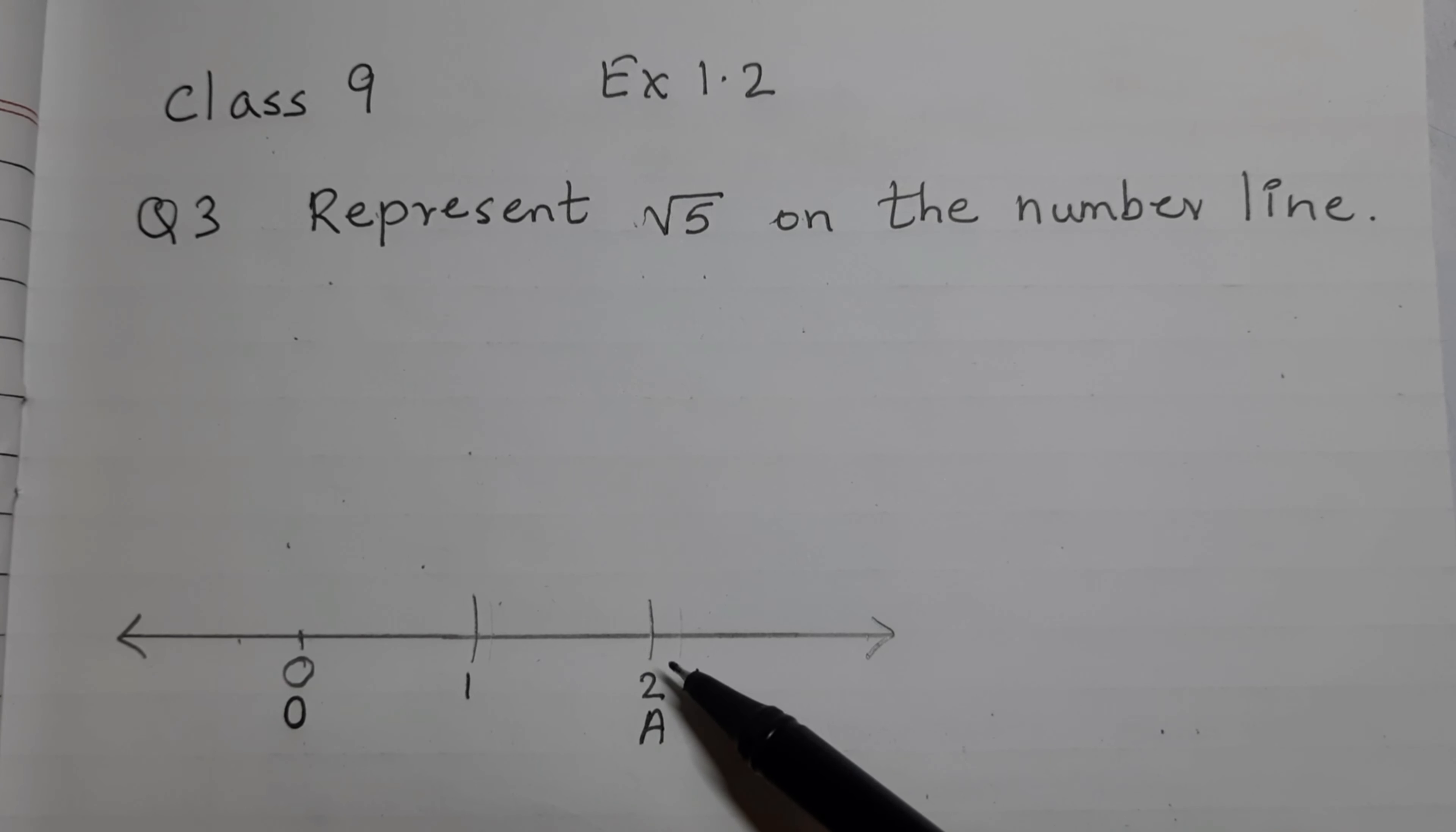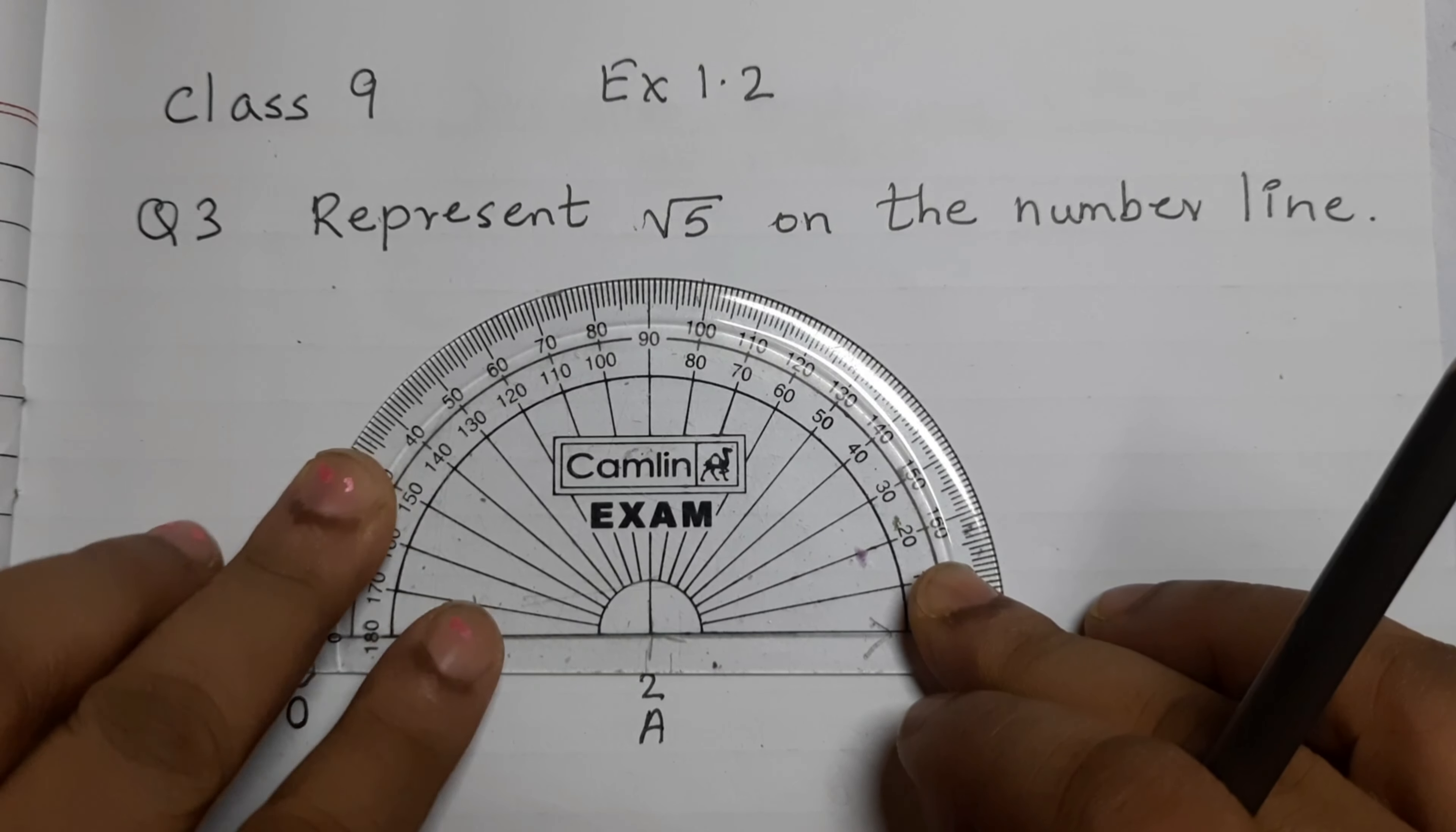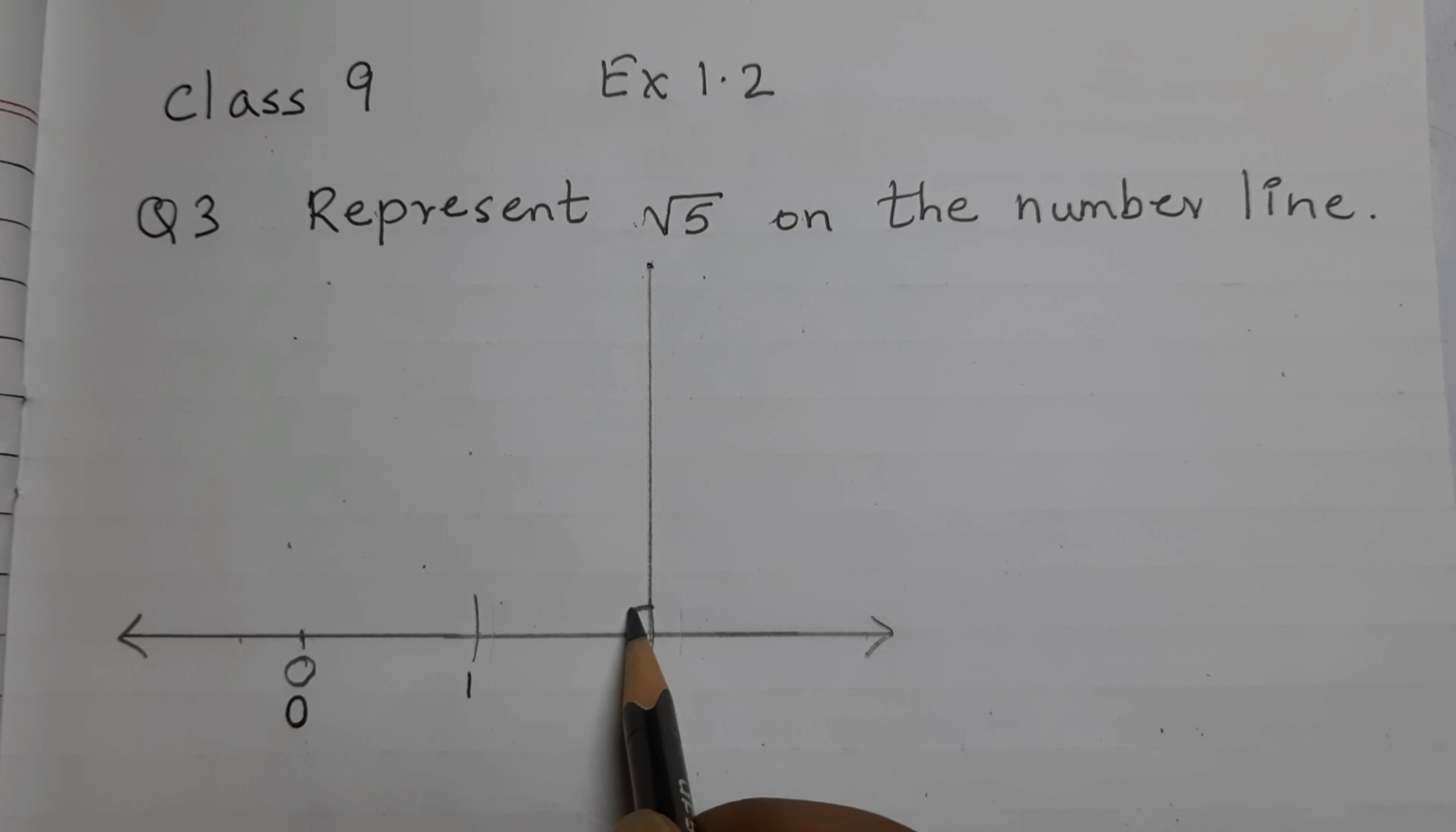At A, draw a perpendicular using a protractor or a compass. I am using a protractor. So place it like this and we want a perpendicular, so 90 degrees. Mark a point here and join these two points. This is perpendicular.